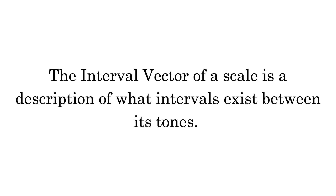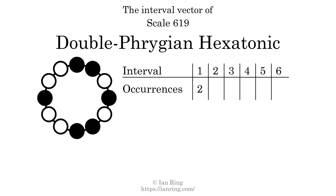The interval vector of a scale is a description of what intervals exist between its tones. There are 2 intervals with the size of 1 semitone. There are 2 intervals with the size of 2 semitones. There are 4 intervals with the size of 3 semitones.